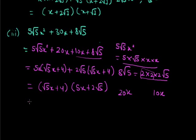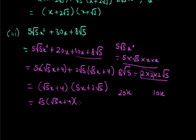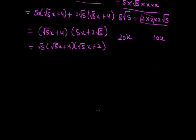Now among these two terms we take (√5x + 4) as common, leaving (5x + 2√5). We can further factorize 5x + 2√5 by taking √5 common, giving √5(√5x + 2). So the final factorization is √5(√5x + 4)(√5x + 2). This completes the factorization of 5√5x² + 30x + 8√5 by splitting the middle term.